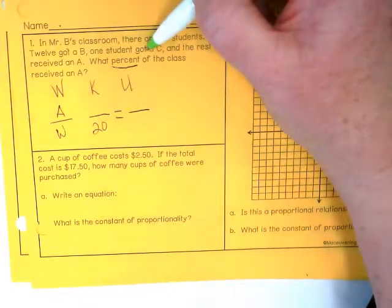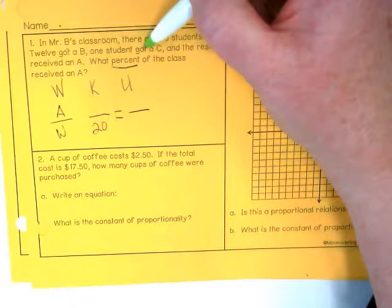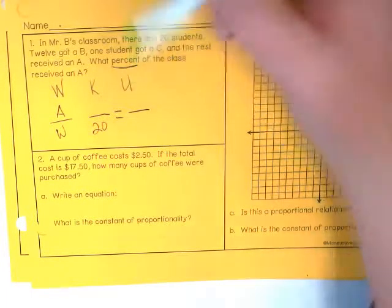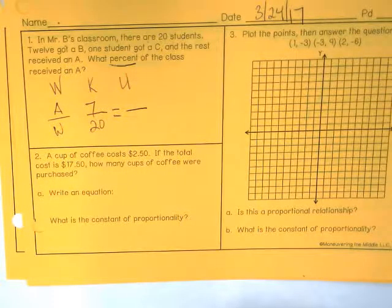Twelve and one equals thirteen. The difference between twenty and thirteen is seven, so the seven kids must have gotten an A.